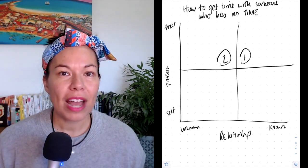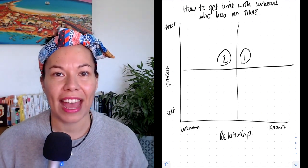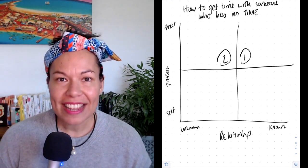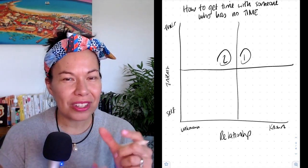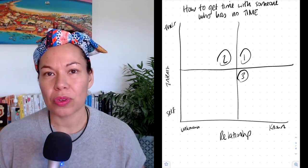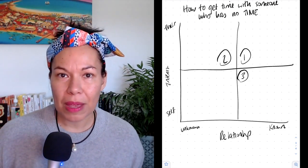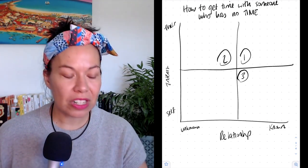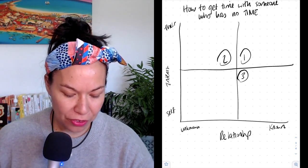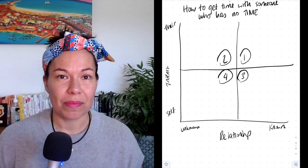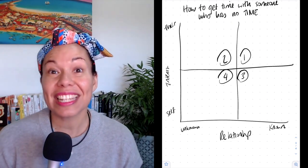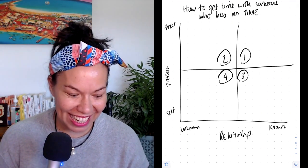There might be a greater chance that you'll get that time with them. Number three — this was very close — is if you're known to them but it's in your self-interest to meet with them more than their interest. I think that's number three. And number four is if you're unknown to them and it's in your self-interest — that makes it really tough to get time.